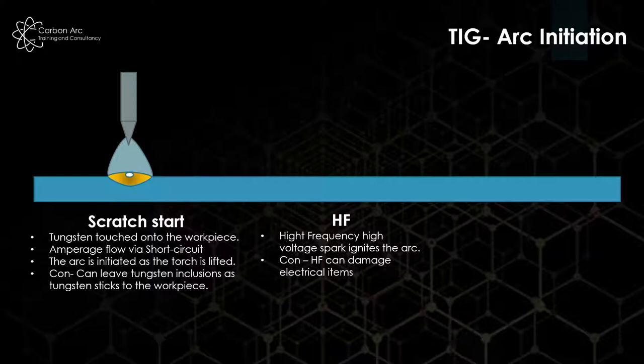We can have high frequency or HF. Here we create our arc gap ready two to three millimeters distance from the workpiece, press our start button, and we get a high frequency high voltage spark across the arc gap. We've removed the fact we're going to touch the tungsten onto the workpiece, but now we have a high frequency high voltage spark which can damage electrical items or play with pacemakers. It's maybe better for tungsten inclusions but worse because of the other damage it can cause.